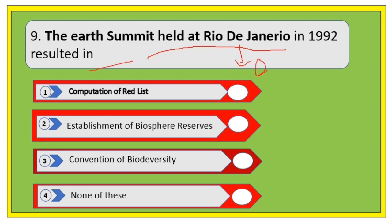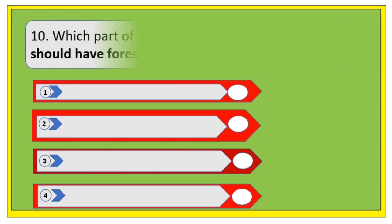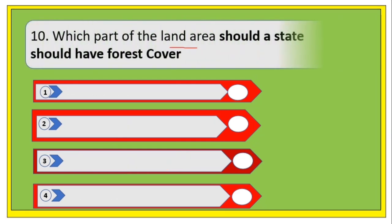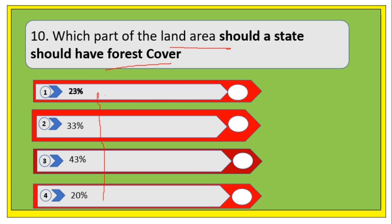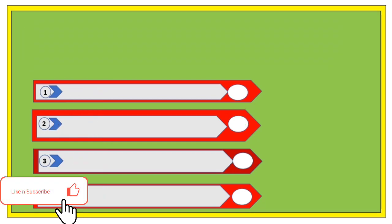Next question: the Earth Summit held in Brazil in January 1992 resulted in — the right answer is the Convention on Biological Diversity. Next question: what percentage of land should a state dedicate to forest cover? The right answer is 33 percent.